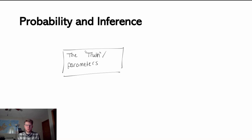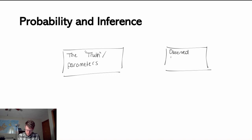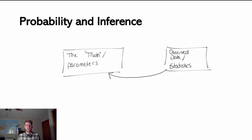Unfortunately, when we're working in the real world, all we're typically going to have is a sample from that true distribution. Over here on the right, I'm going to draw a box and call it observed data — and also statistics. What we're typically working with is a sample of observed data where we can calculate some statistics that we hope are reasonable estimates of these true parameters that exist.